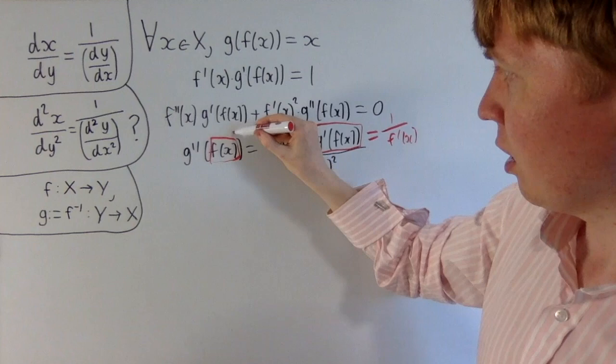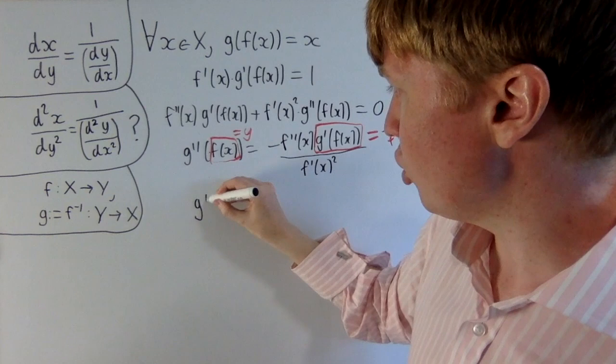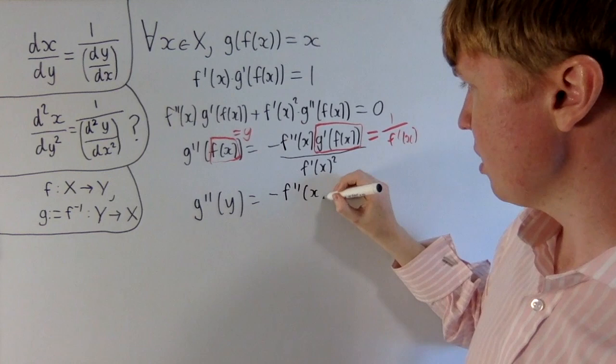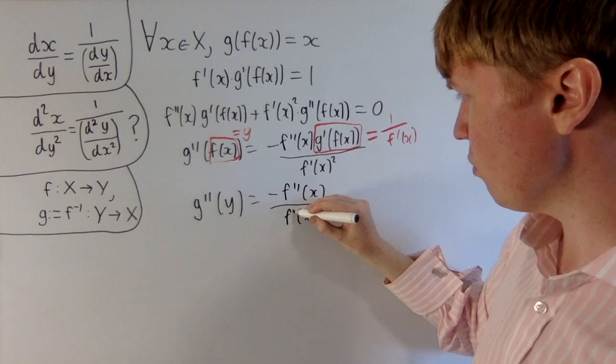So what we get in the end is g''(y) = -f''(x)/[f'(x)]³. This doesn't really simplify any further.